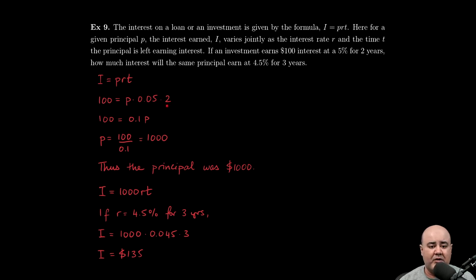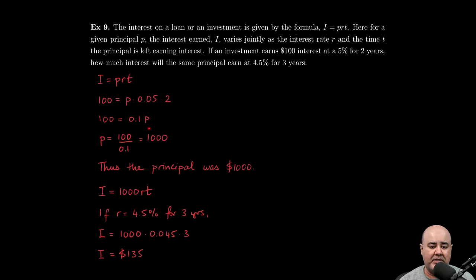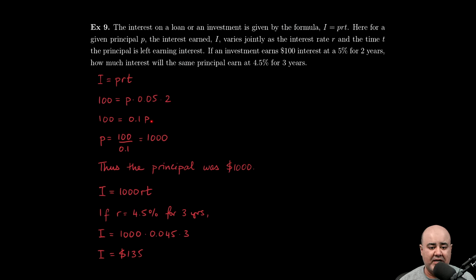And we're asked how much interest will the same principal earn at 4.5% for three years. So before we can answer that question, we need to figure out what this constant of variation is. So 0.05 times 2 is 0.1, so the right-hand side simplifies to 0.1P. In order to solve for P, we can divide the 0.1 over to the other side. That gives us P equals 100 over 0.1, which simplifies to 1,000.